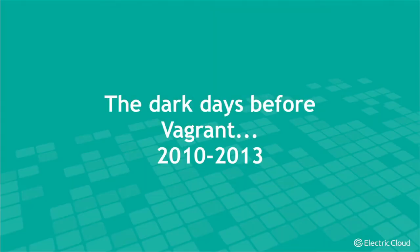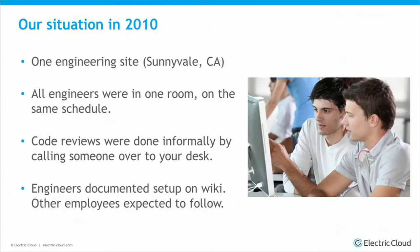I'll be talking about how we first landed on Vagrant — I call these the dark days. In 2010, we were in one room and all the engineers were on the same schedule. It was early days, and as a result, a lot of our processes were very informal and very Wiki-driven. Throughout the talk, I'll be saying we started off with Wiki and as time went on, we moved more and more to code.